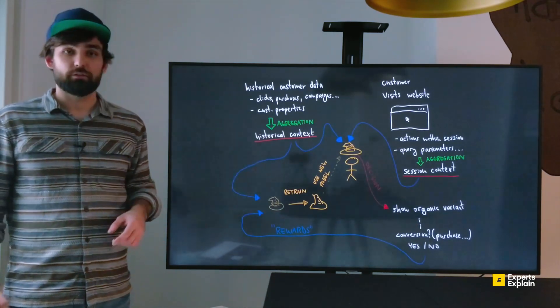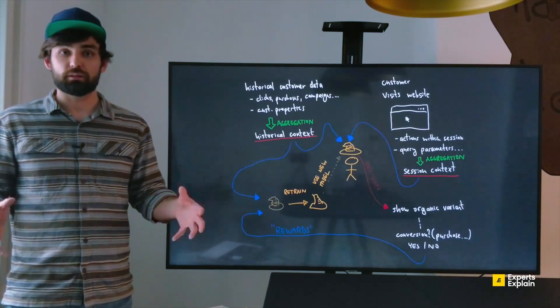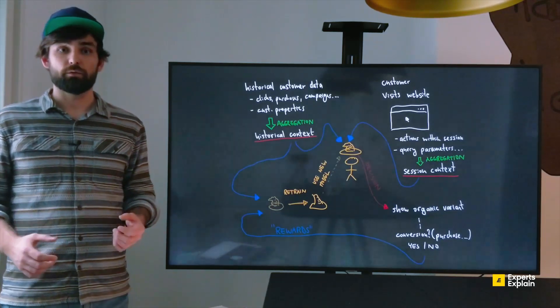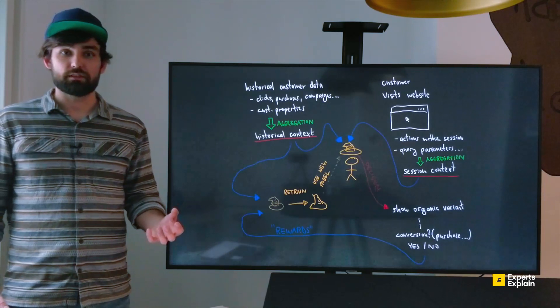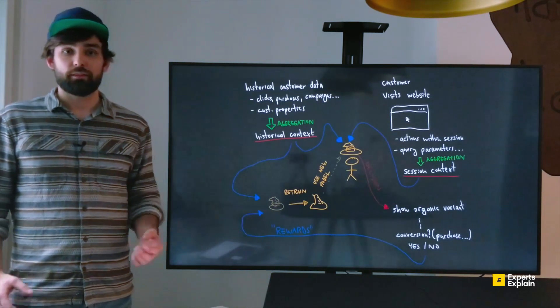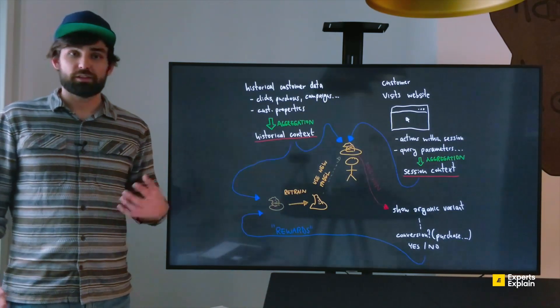It will select a variant. For example, it will show the organic messaging. Now something happens. The customer might convert. That means they click on the banner, they make a purchase, or they sign up for the newsletter.